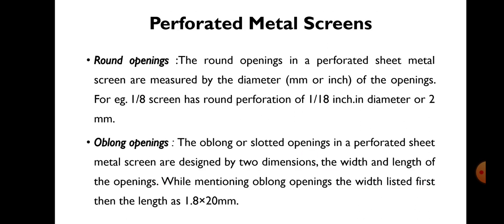We will go in detail with the Perforated Metal Screen Openings. First is the round openings. The round openings in a Perforated Sheet Metal Screen are measured by the dimension of diameter, which is measured either in mm or inch of the openings. For example, a 1/8 screen has a round perforation of 1/8 inch in diameter or 2 mm. We designate round openings in a perforated metal sheet screen by measuring the diameter in mm or inch.